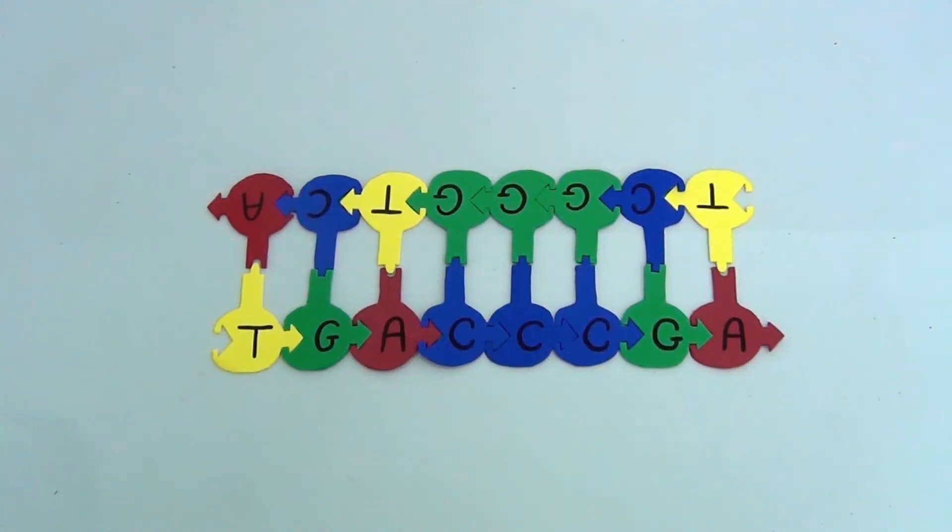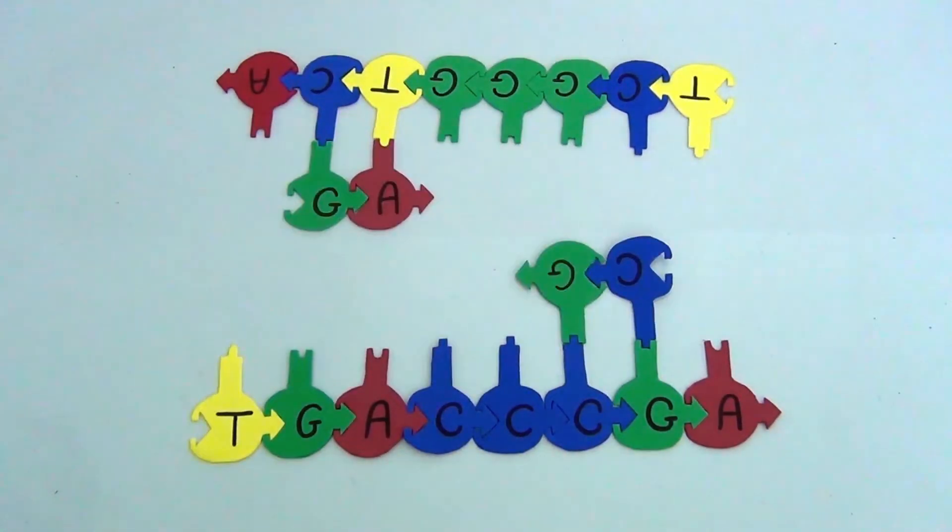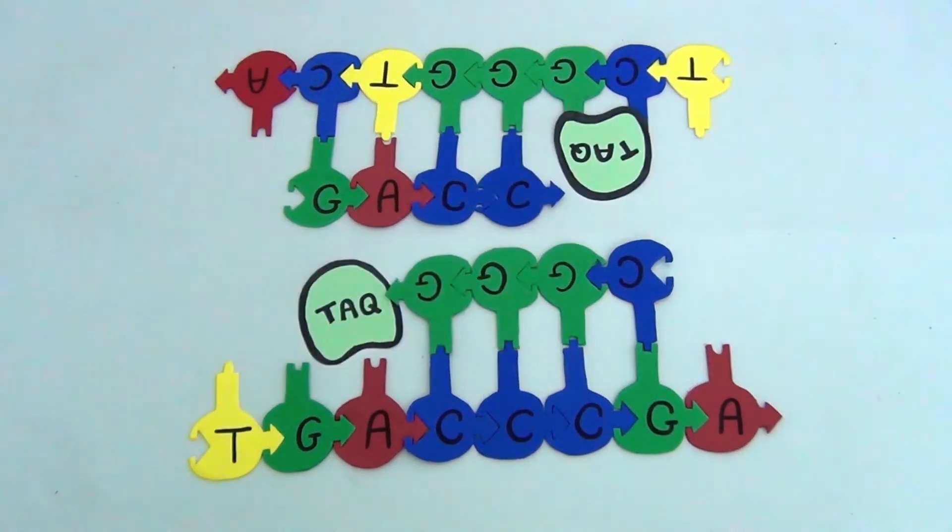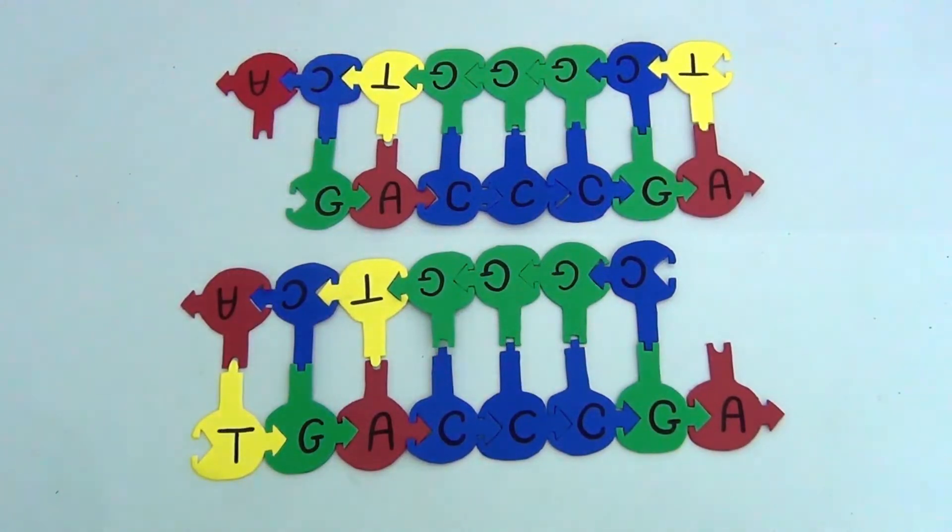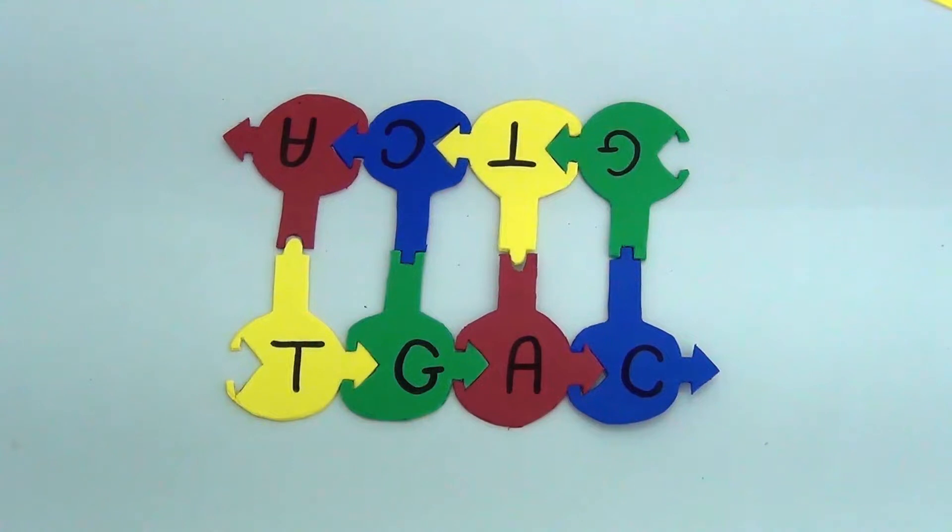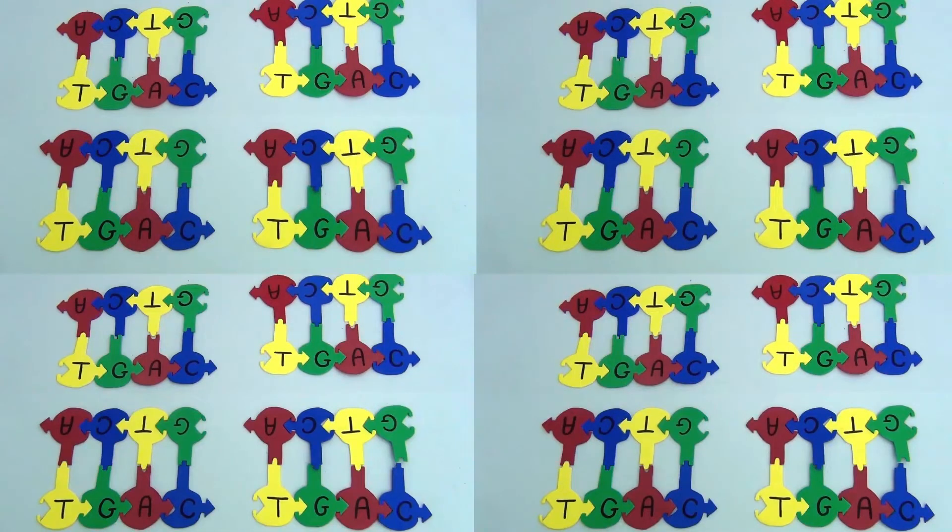PCR mimics the process of DNA replication happening in your cells. Through a repetitive process of denaturing DNA, adding primers, and building new strands of DNA, PCR is able to duplicate your target sequence DNA approximately every two minutes. This means if I had one copy of my target sequence, after two minutes I'd have two copies, then four, eight, 16, and so on.